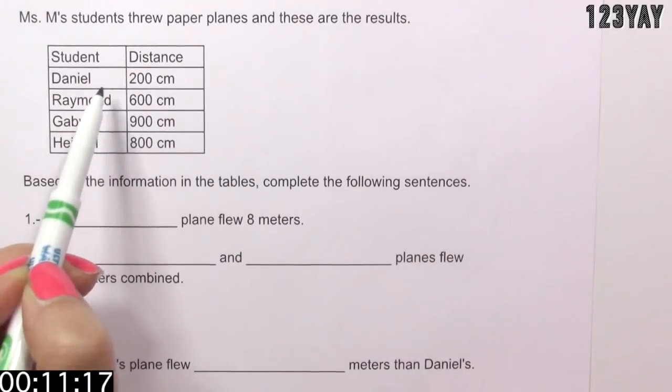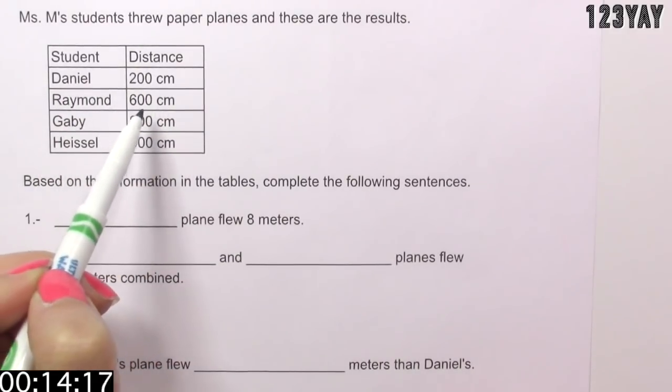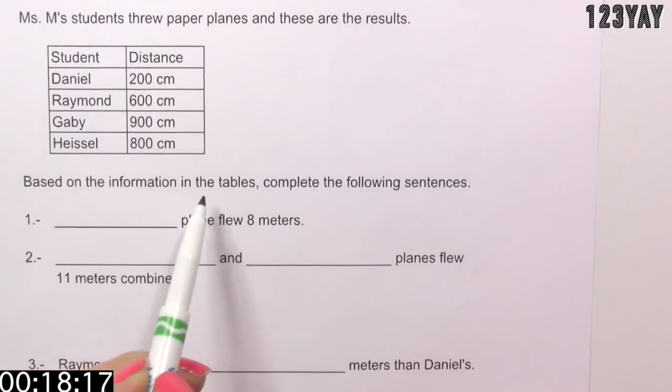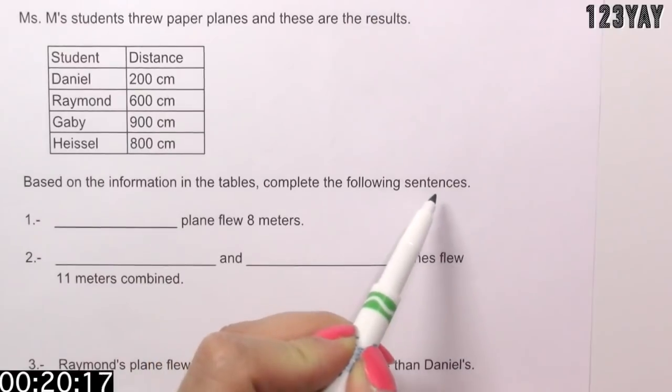And we see that Daniel, 200 centimeters, Raymond, 600 centimeters, and so on. Based on the information in the tables, complete the following sentences.